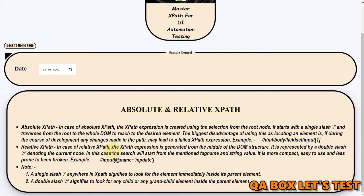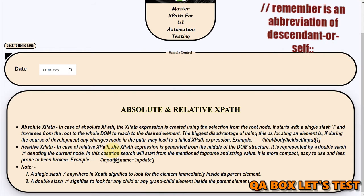In case of relative XPath, the XPath expression is generated from anywhere within the DOM structure. It is not necessary to start from the root now. It is represented by a double slash, and double slash denotes the current node. Wherever you are, that becomes your context node and you're going to identify the element from the context node.